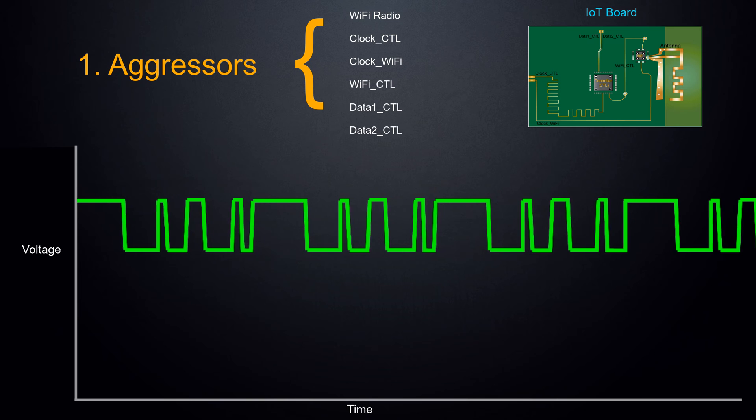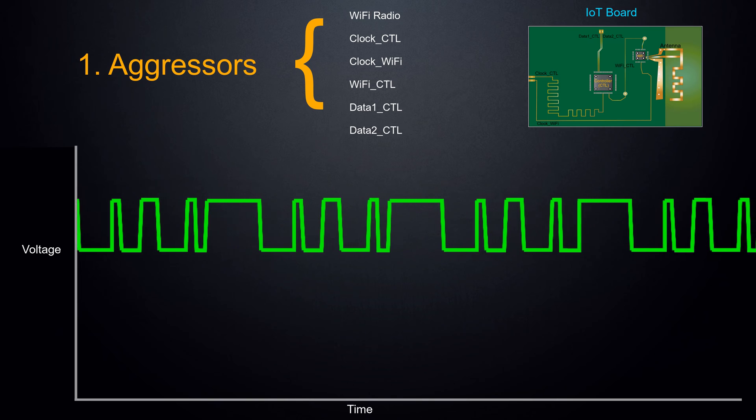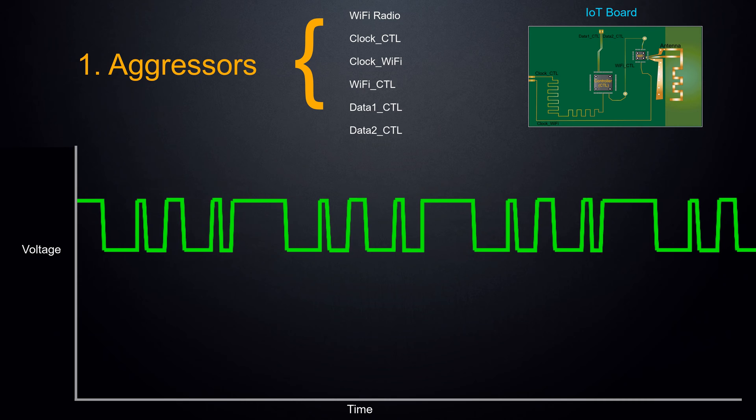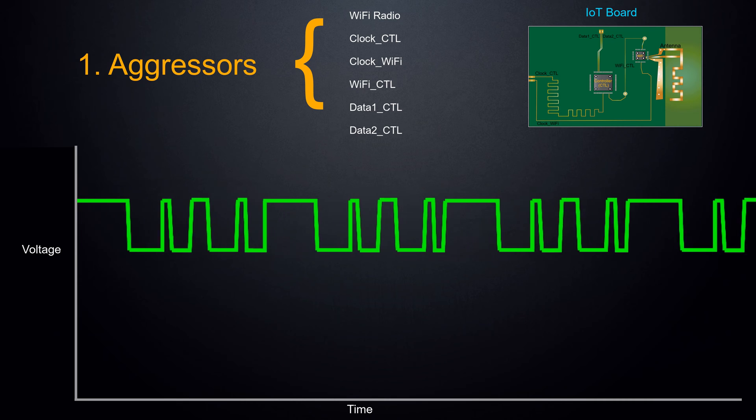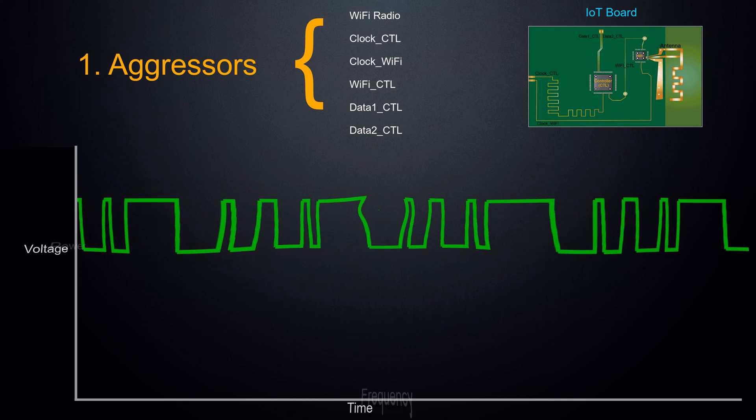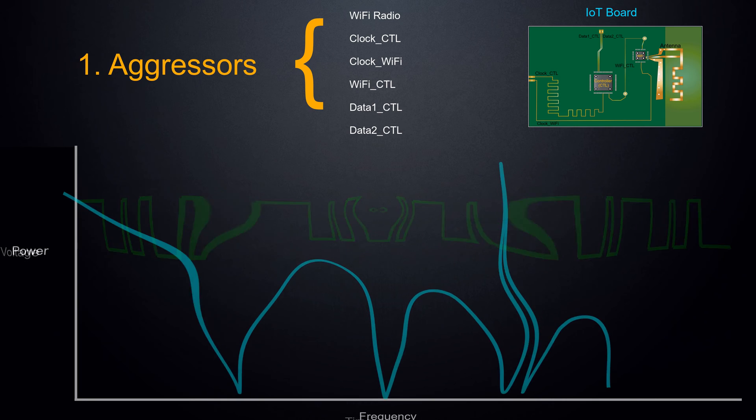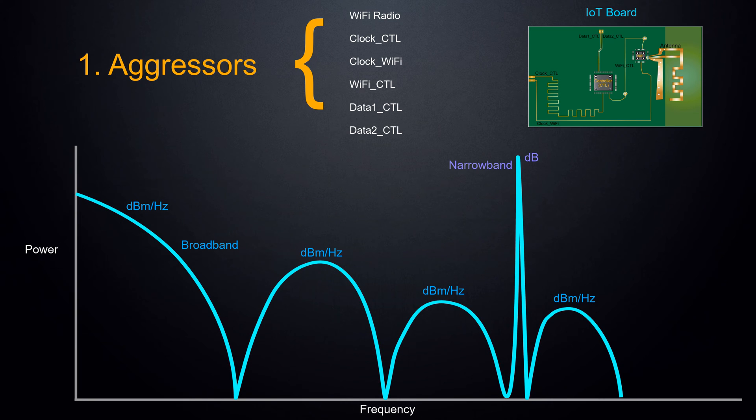To prep the board for simulation, three ingredients are required. First is the aggressor spectra. Essentially, it's the amount of power at any given frequency, regardless of emitter type. Spectra is often obtained by transforming a time-varying signal into the frequency domain. Spectra may have narrowband and broadband characteristics.